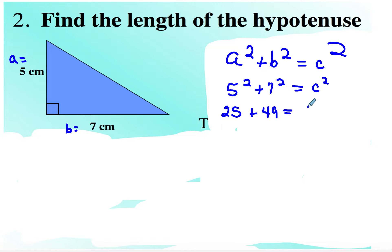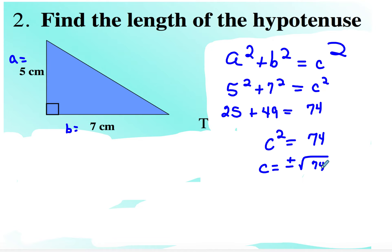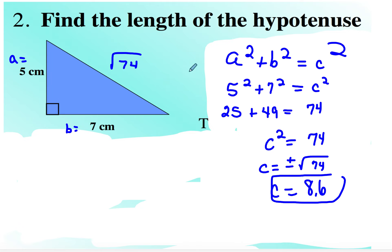74 does not come out nicely, so we have that C squared is equal to 74. Since it's the side of a triangle, it cannot be negative, so C is equal to the positive square root of 74. If you put that into your calculator and round to the nearest tenth, you get C is equal to 8.6. So that's the hypotenuse.